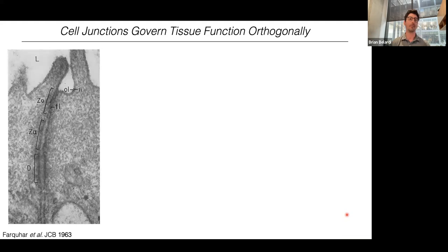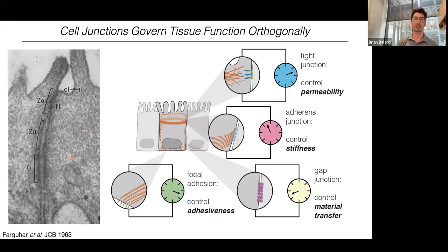So how are we going about engineering synthetic tissue that allows for dynamic changes in tissue function? We're focusing on cell junctions. Here on the left is a very old electron micrograph from George Palade from the 1960s — he's a Nobel laureate — showing two cells contacting one another. Along the lateral surface of these cells, there are a variety of cell junctions. Within epithelial tissue, these junctions appear to control tissue function somewhat orthogonally: the apical-most junction, the tight junction, controls permeability; below that is the adherens junction that controls stiffness.